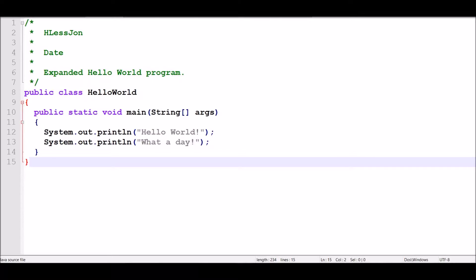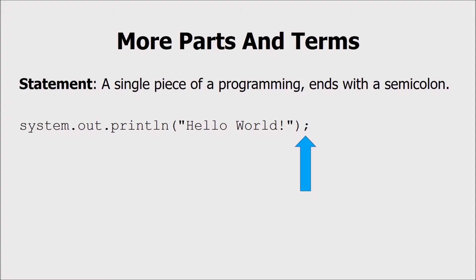Let me start by looking at a slightly modified Hello World program and I want to go over some terms that can be used to describe different parts of a Java program and you will see these throughout your career in the Java world. Statements are the single pieces of a program and these all end with semicolons.